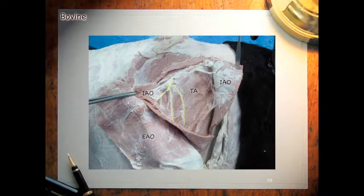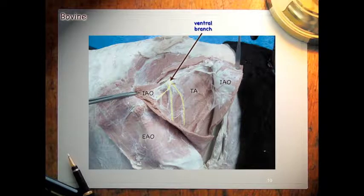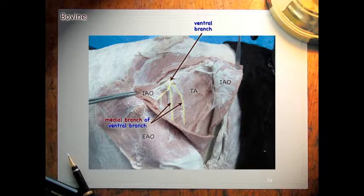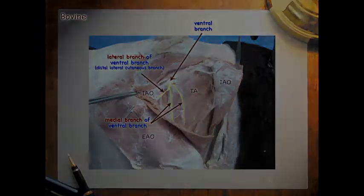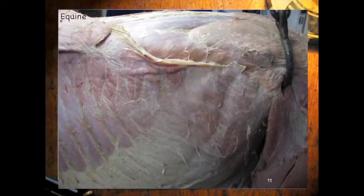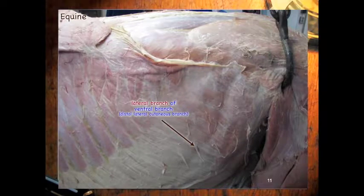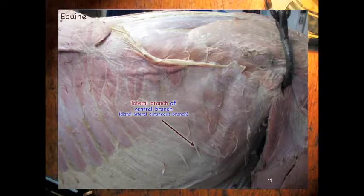In this image we can see the ventral branches coming out — remember they are going to come out ventral to the transverse processes. Here we have the medial branches of the ventral branch, and here we can see a lateral branch of the ventral branch. Looking at the equine, we can see these branches coming off down here; these are the lateral branches of the ventral branch providing innervation to the ventral portion of the flank.